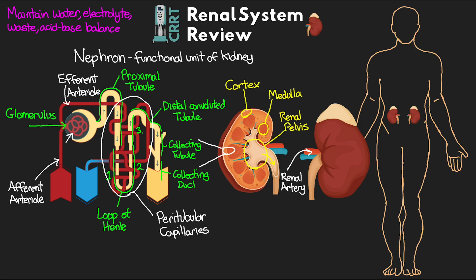The main goal of the kidney is to filter the blood and form urine. In this process, the nephron regulates water, electrolytes, waste, and acid-base balance. The afferent arteriole enters and forms the glomerulus — a high-pressure capillary bed — and blood exits via the efferent arteriole. The afferent arteriole is a larger diameter than the efferent arteriole, allowing a greater volume of blood to enter than exits, creating high hydrostatic pressure.